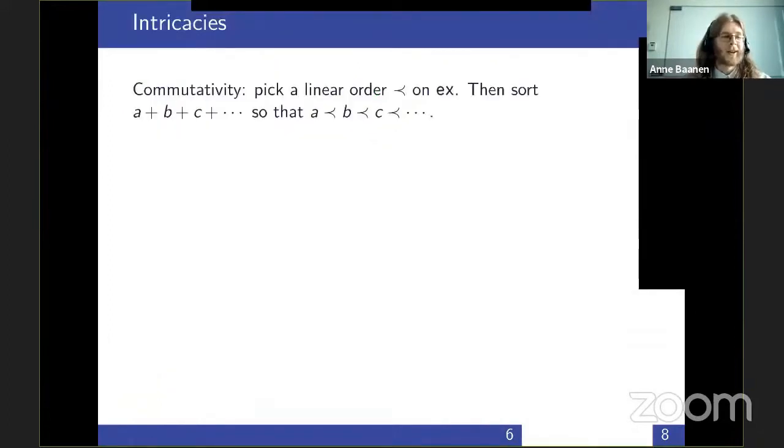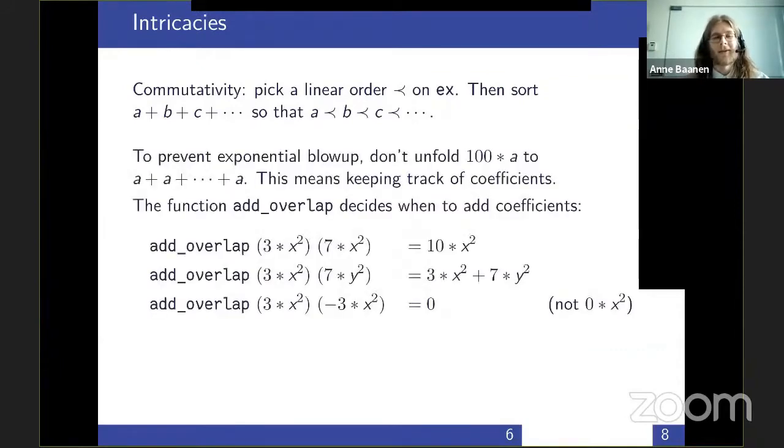We also want commutative operators. For that, we pick a linear order on the expressions. If we have a string of additions like a + b + c and so on, we want all the terms in this addition to be in this linear order, so a should be less than b, should be less than c, etc. This allows us to do the next feature quite nicely.